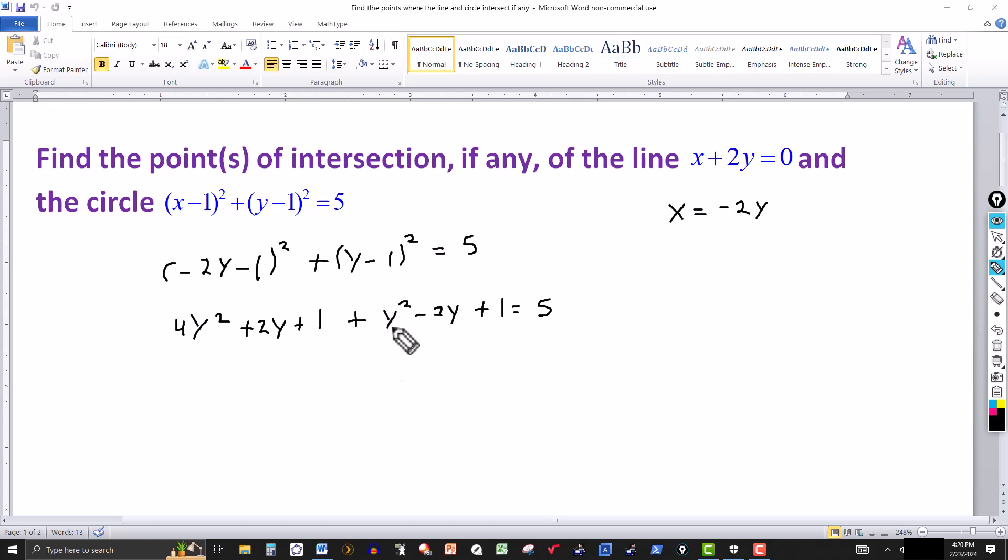And then we just collect terms. So y² and 4y² is 5y². And this should be a 4 here, double the product. So then here we have a minus 2y and a plus 4y, so that gives me a plus 2y. And then I've got a 1 and a 1 is 2. I bring the 5 over, that's a negative 5, so it's negative 5 and 2 is a minus 3.